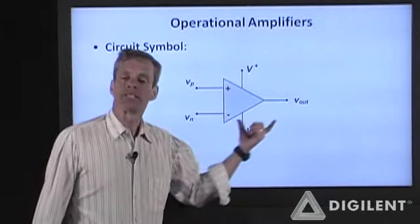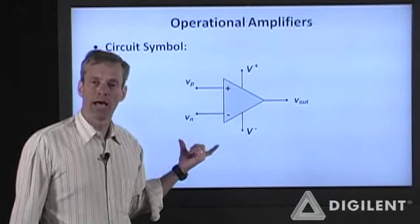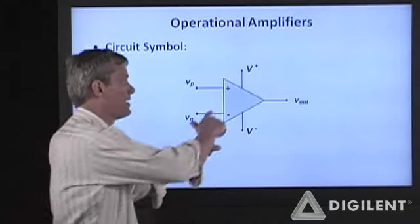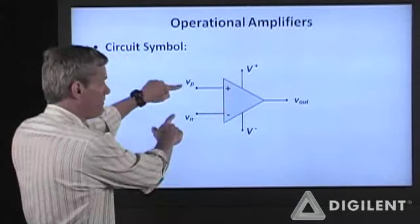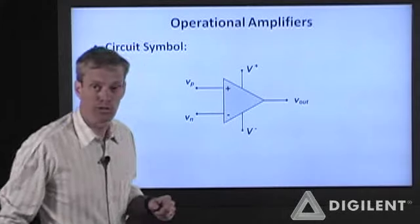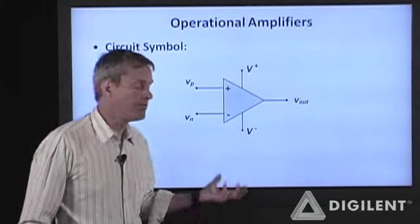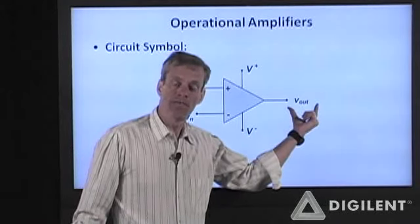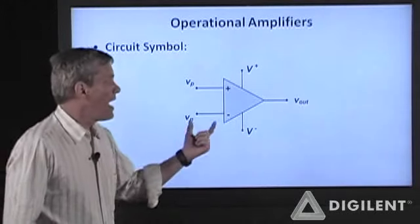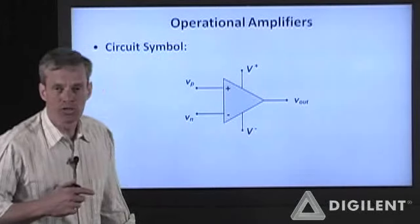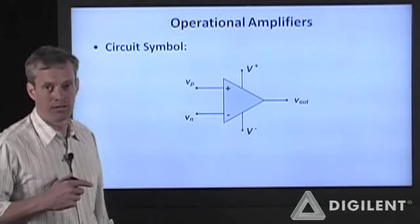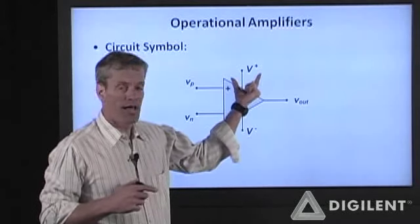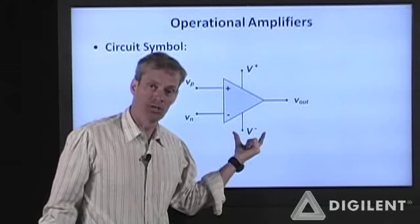The circuit symbol we use to represent an operational amplifier is actually a five-terminal device in general. It has two input terminals, VP and VN, for our positive and negative input terminals, also referred to as our non-inverting and inverting input terminals. It also has an output terminal, Vout, and two terminals where you supply power to this amplifier: V-plus and V-minus, your positive and negative voltage supplies.